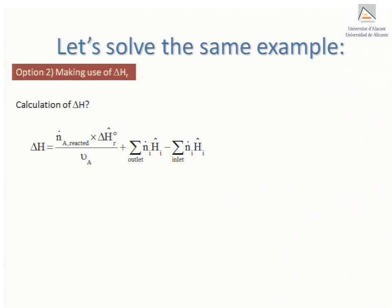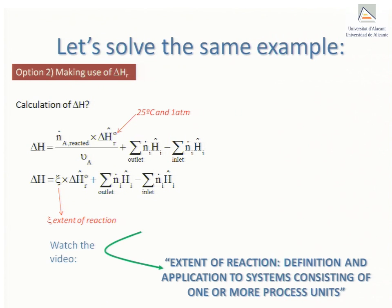The zero superscript attached to the reaction enthalpy indicates that it was determined under standard conditions, 25 degrees Celsius and 1 atmosphere. Now the first term of the expression can be rewritten in terms of the extent of reaction of the combustion reaction. In this regard it's recommended that students view the video lesson titled extent of reaction definition and application to systems consisting of one or more process units.